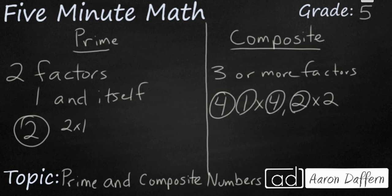Even though you have two times two, you only list it once. So another prime number would be eleven, because the only way to multiply two numbers to get to eleven is one times eleven. So it has two factors, one and itself.